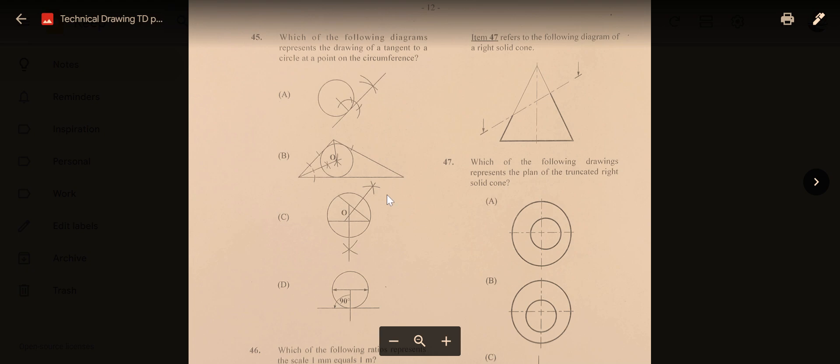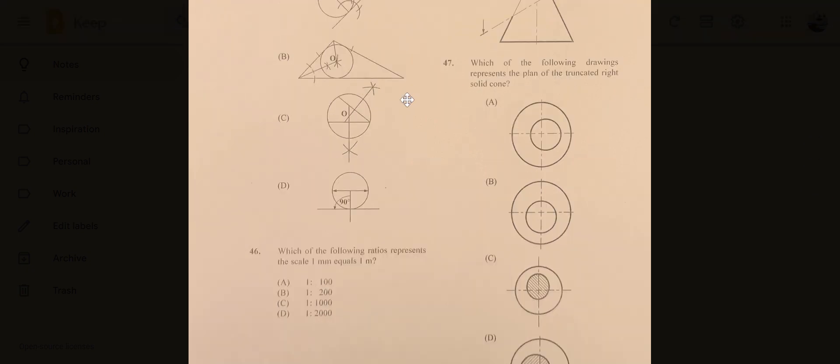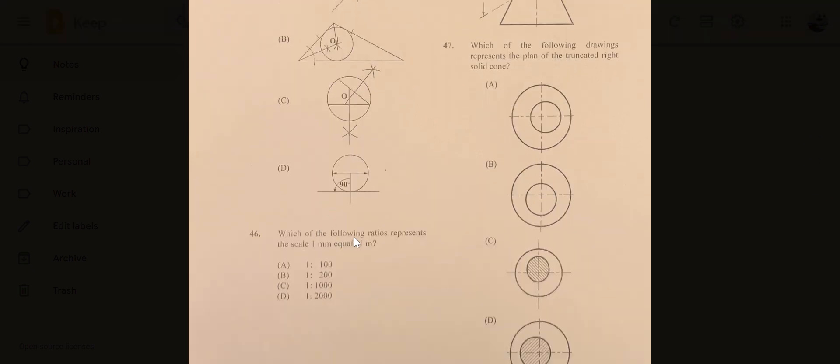Number 46: which of the following ratios represents the scale one millimeter equals one meter? That will have to be C, one to one thousand. A meter will have a thousand millimeters in it, so the answer is C, one to one thousand.